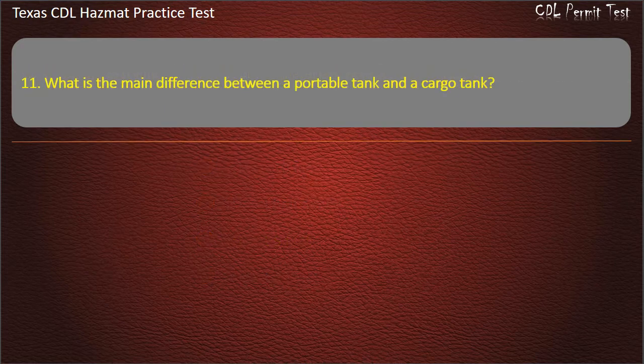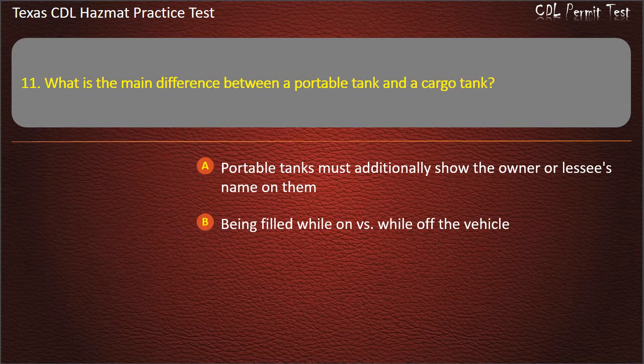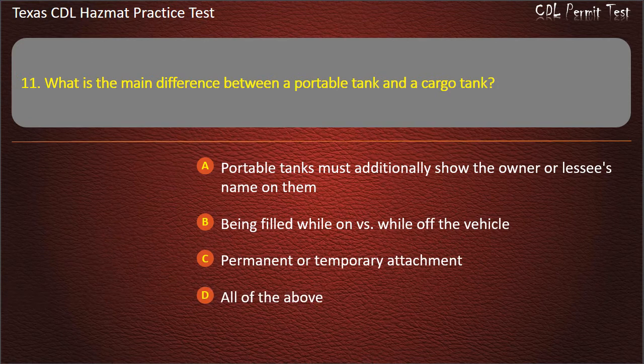Question 11: What is the main difference between a portable tank and a cargo tank? Portable tanks must additionally show the owner or lessee's name on them. Being filled while on vs. while off the vehicle. Permanent or temporary attachment. All of the above. Answer: All of the above.